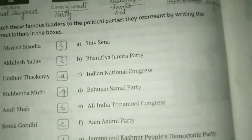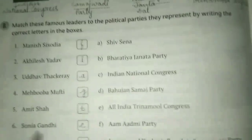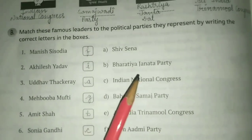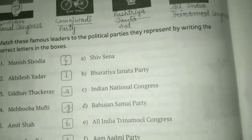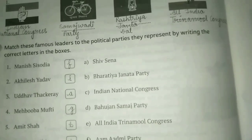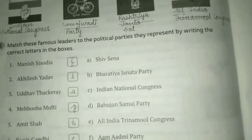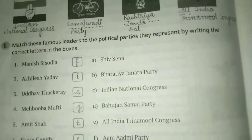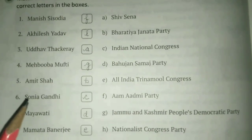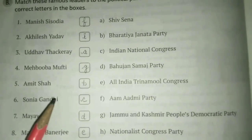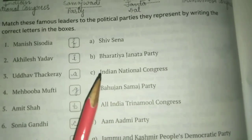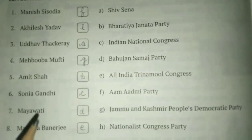Fifth, Amit Shah — he represents Bharatiya Janata Party. It was officially founded in 1980 by Bhairon Singh Shekhawat, Atal Bihari Vajpayee, and Lal Krishna Advani. It is the current ruling political party of the Republic of India. Next is Sonia Gandhi — she represents Indian National Congress.